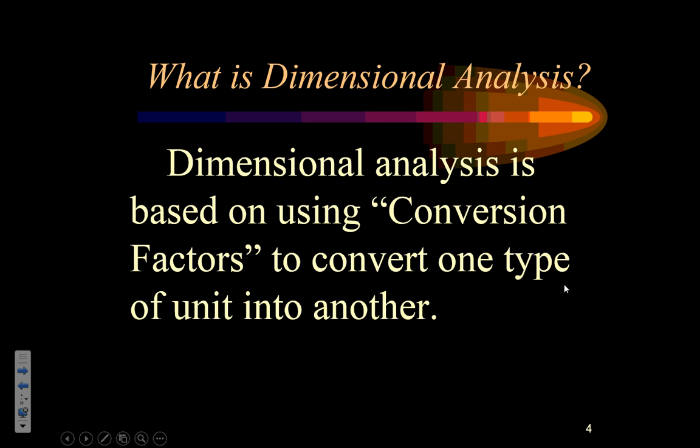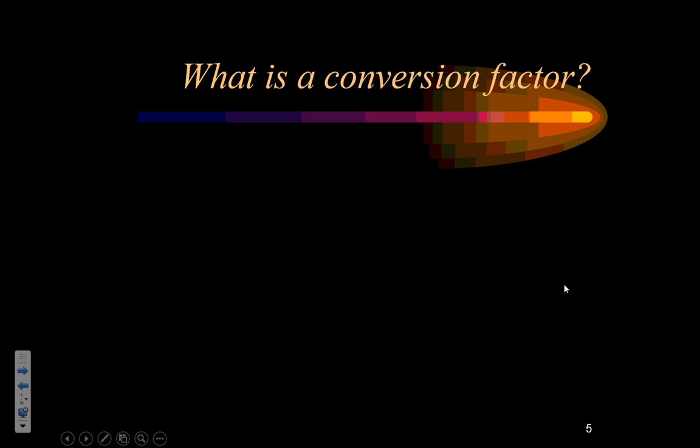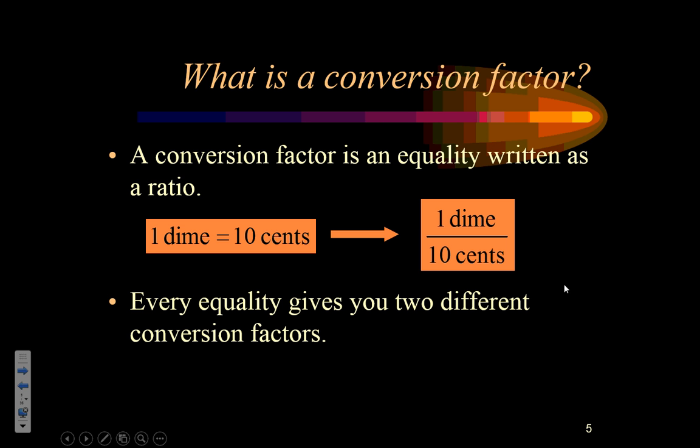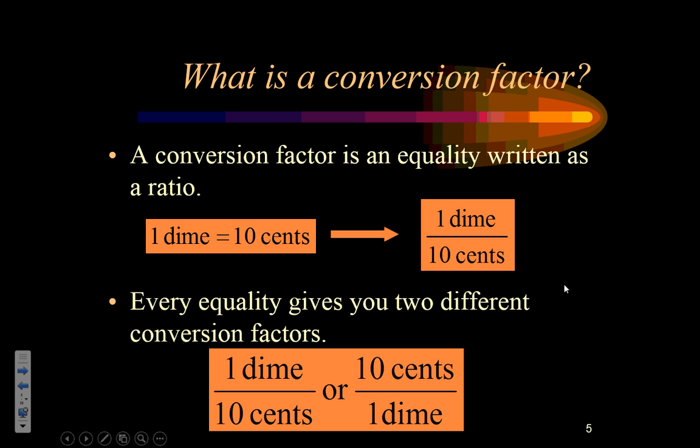So, we're going to use units in problems to solve them. Dimensional analysis is actually based on using what we call conversion factors. And that's a ratio that we use to convert one type of unit into another type of unit. A conversion factor is actually based on an equality. And you're going to take that equality and we're going to write it as a ratio. Like, one dime equals 10 cents can be written as one dime over 10 cents.